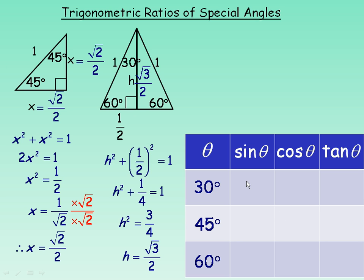Now we'll fill in the table with exact values for the sine, cosine, and tangent of 30°, 45°, and 60°. Starting with sine of 30°: sine is opposite over hypotenuse. For the 30° angle, the opposite side is one half, divided by the hypotenuse of 1, giving sine 30° = one half. For sine of 45°, the opposite side is root 2 over 2, divided by the hypotenuse of 1, so sine 45° = root 2 over 2.